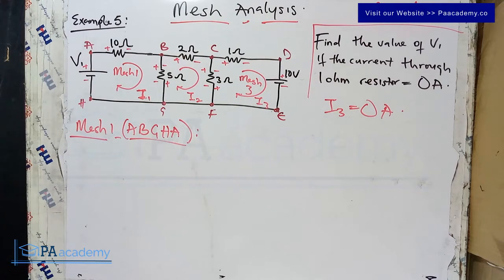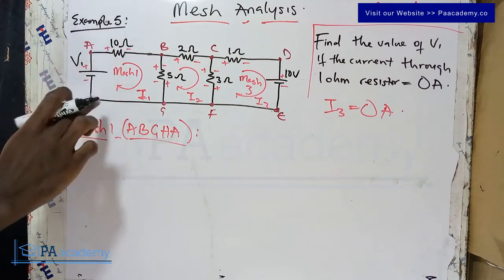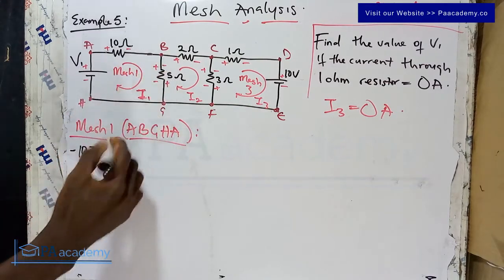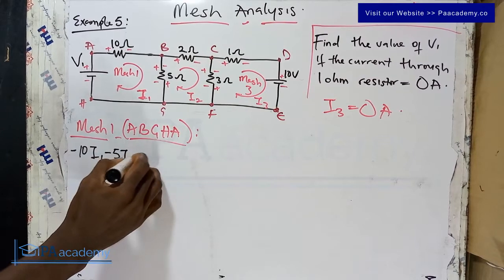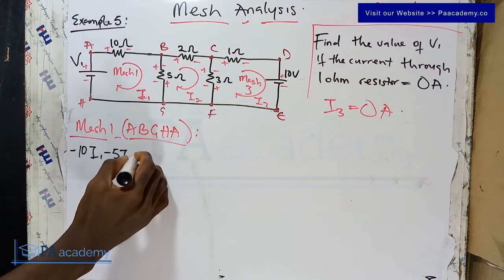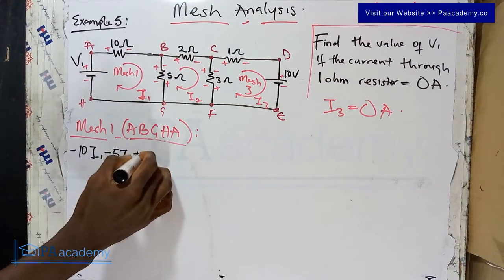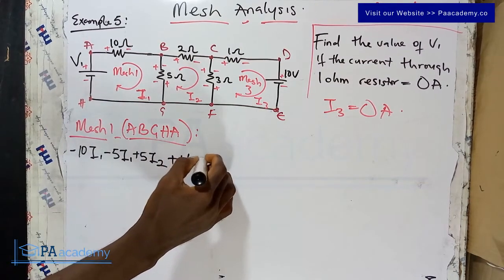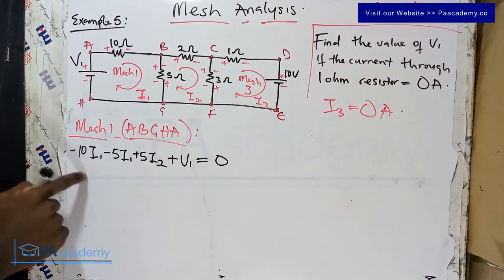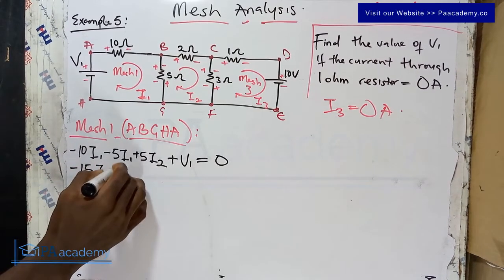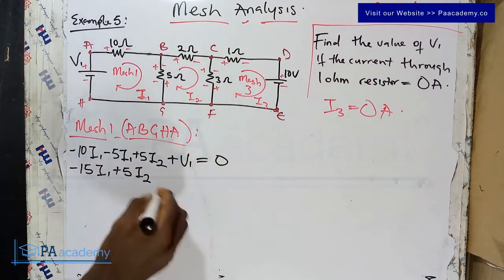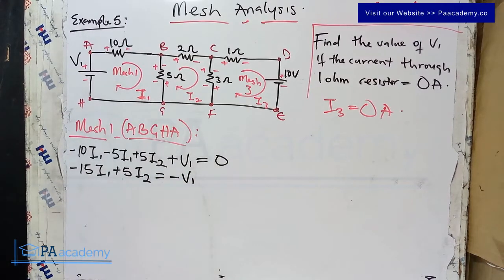For mesh one, the path is A→B→G→H→A. From point A: the 10-ohm resistor gives −10·I1, the 5-ohm resistor gives −5·I1, and due to I2 it contributes +5·I2. From H to A the voltage source gives +V1, equals zero. Simplifying: −15·I1 + 5·I2 + V1 = 0, giving us Equation 1: −15·I1 + 5·I2 = −V1.